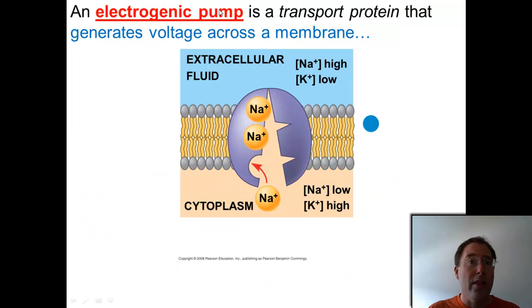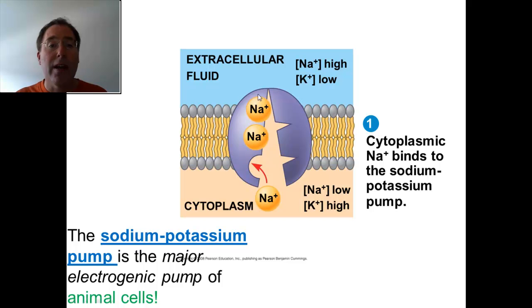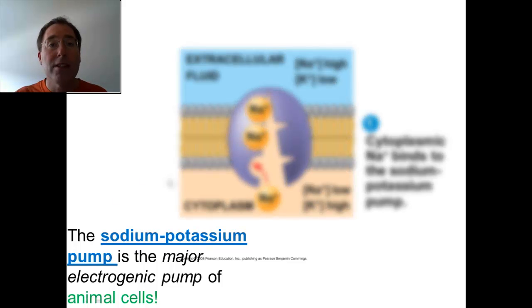Additionally, this can be called an electrogenic pump, this active transport mechanism where sodium is pumped out and potassium is pumped in. This is going to generate a voltage across the membrane. Remember, voltage, electricity. We're just talking about electrons either being there in excess or not being there in the case of positive ions. This is a situation that occurs. And the sodium-potassium pump, it says here, is a major electrogenic pump in all animal cells.